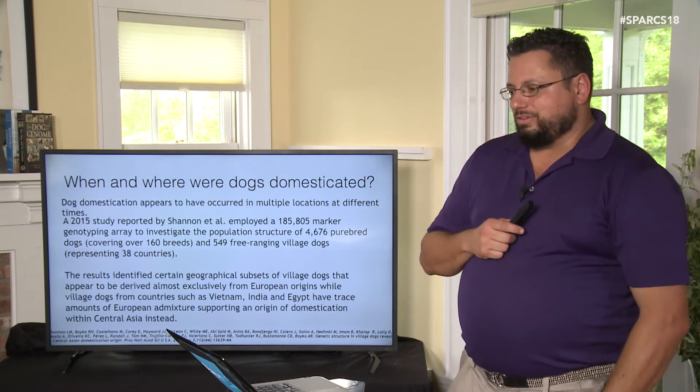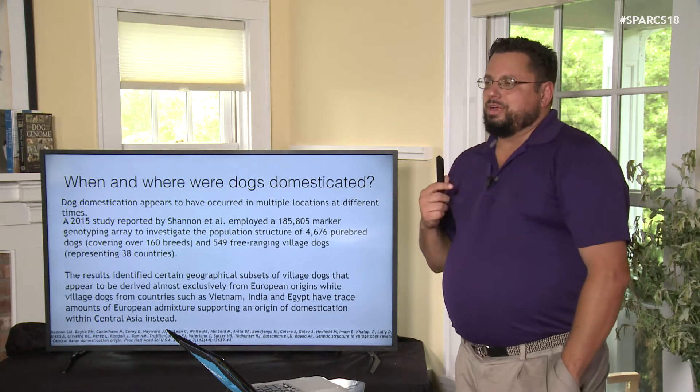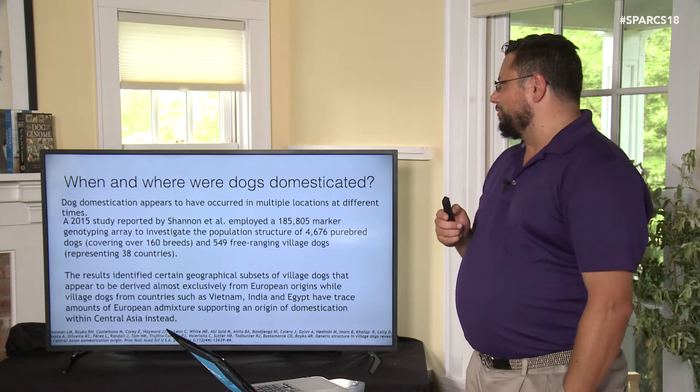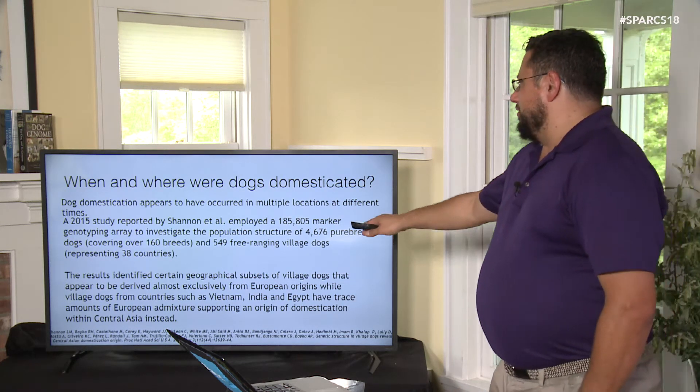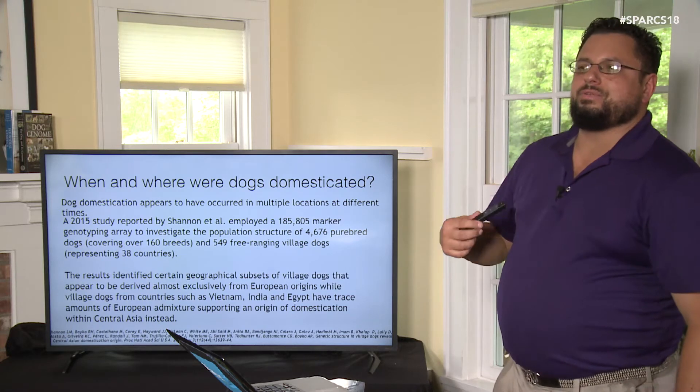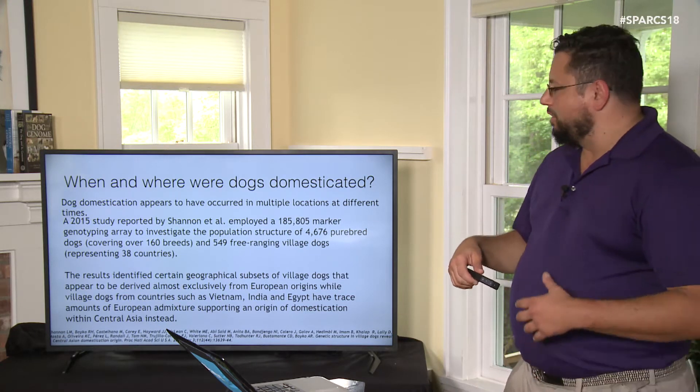So when and where were dogs domesticated? This is a complex problem. Using a 185,000-marker genotyping array — meaning 185,000 single nucleotide polymorphisms across the genome — a 2015 study looked at 4,676 purebred dogs representing 160 breeds.